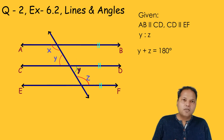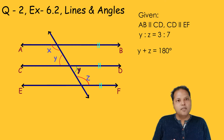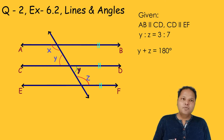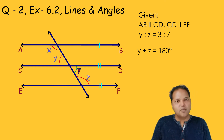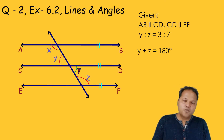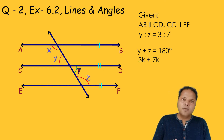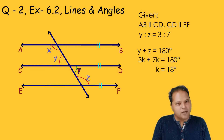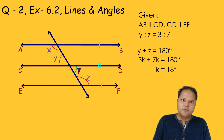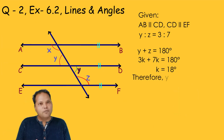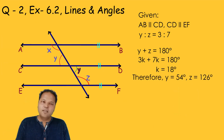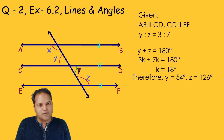It is also given that Y to Z is equal to 3 to 7. Let's assume a common ratio K, so 3K plus 7K equals 180 degrees, giving K equal to 18 degrees. Therefore the value of Y is equal to 54 degrees and the value of Z is equal to 126 degrees.